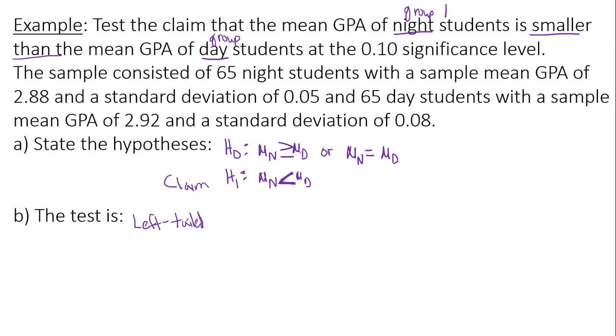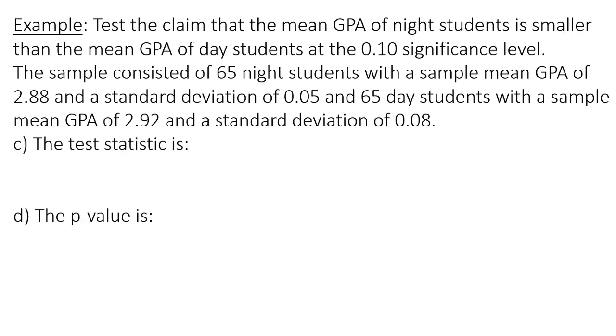Now let's find the test statistic and the p-value. So the information I want to use for Google Sheets to find the test statistic and p-value would be the sample mean for group one, which in this case is going to be nighttime students. There are 65 of them, 2.88 was their mean, standard deviation was 0.05. So group one the mean was 2.88, standard deviation of group one would be 0.05, and sample size for group one would be 65.